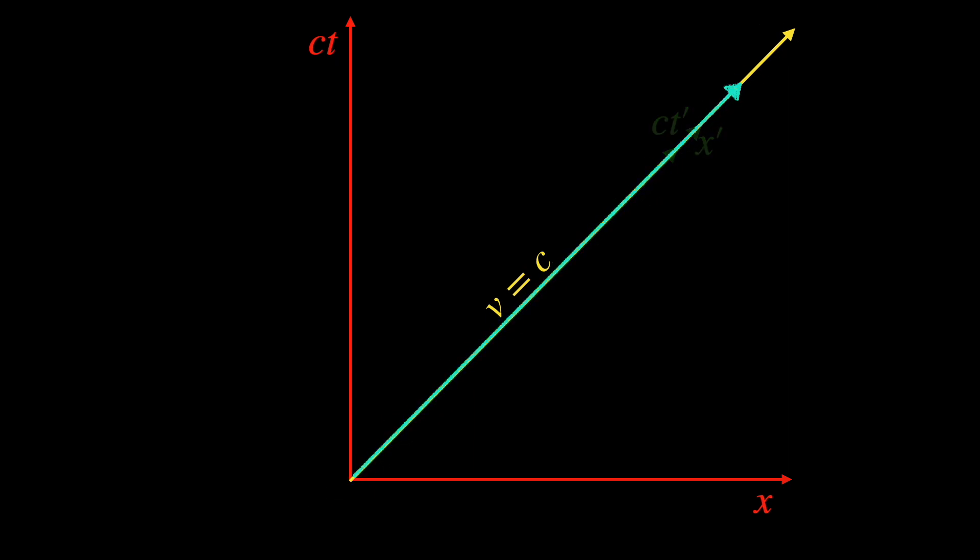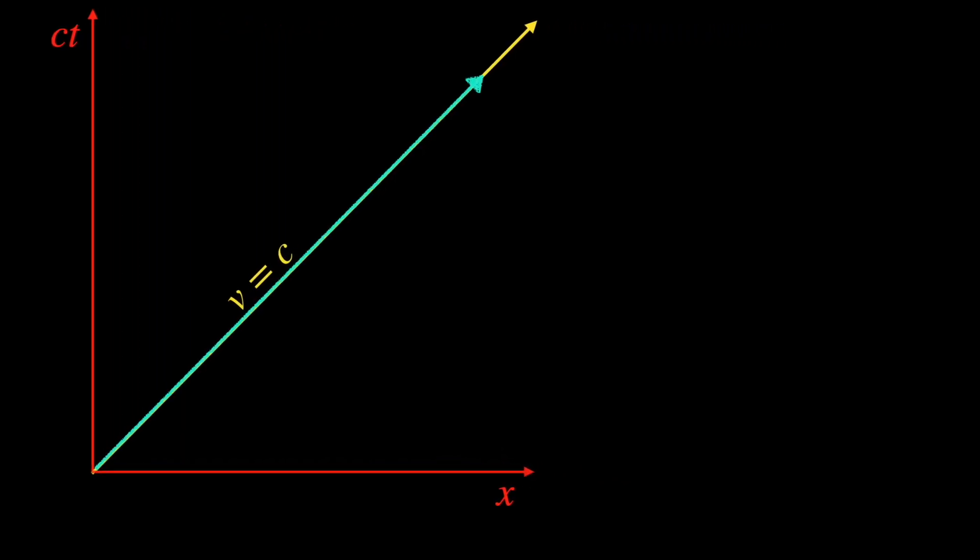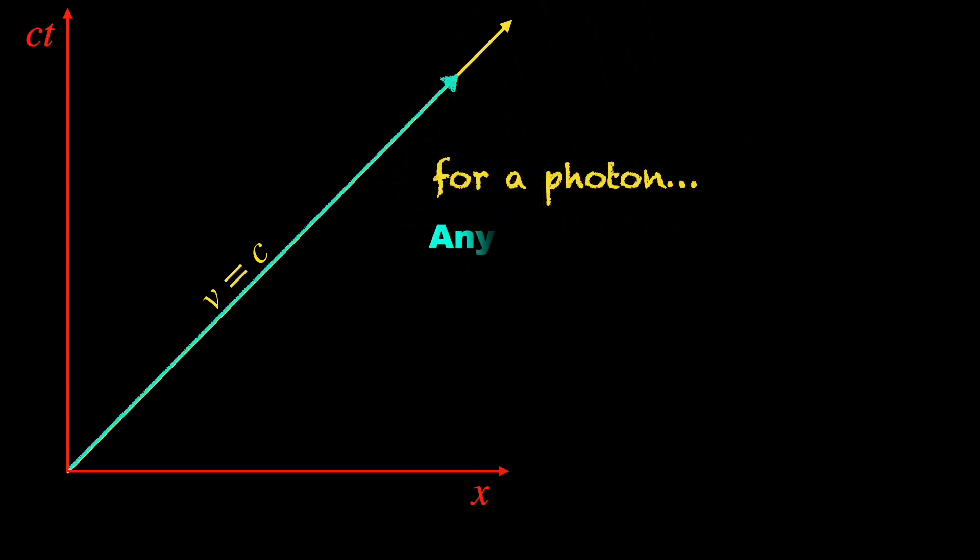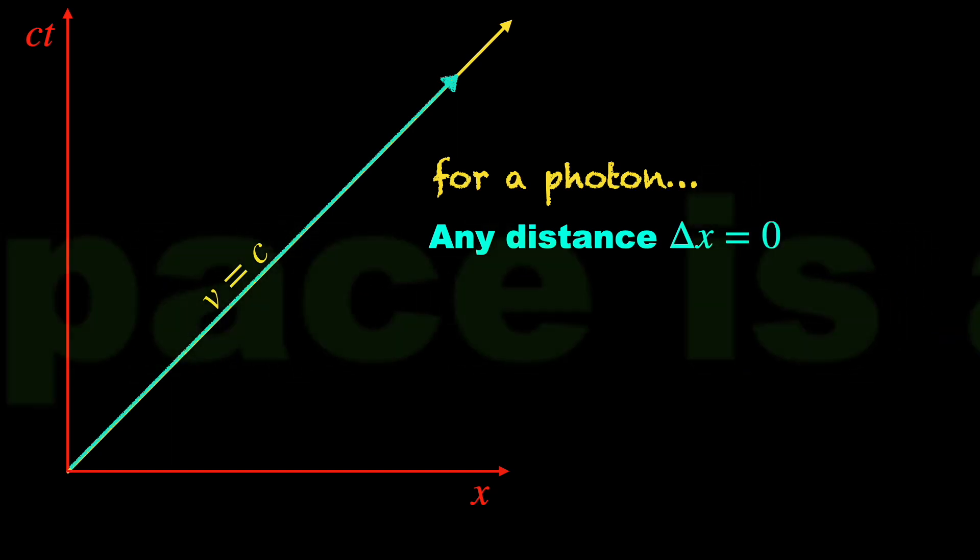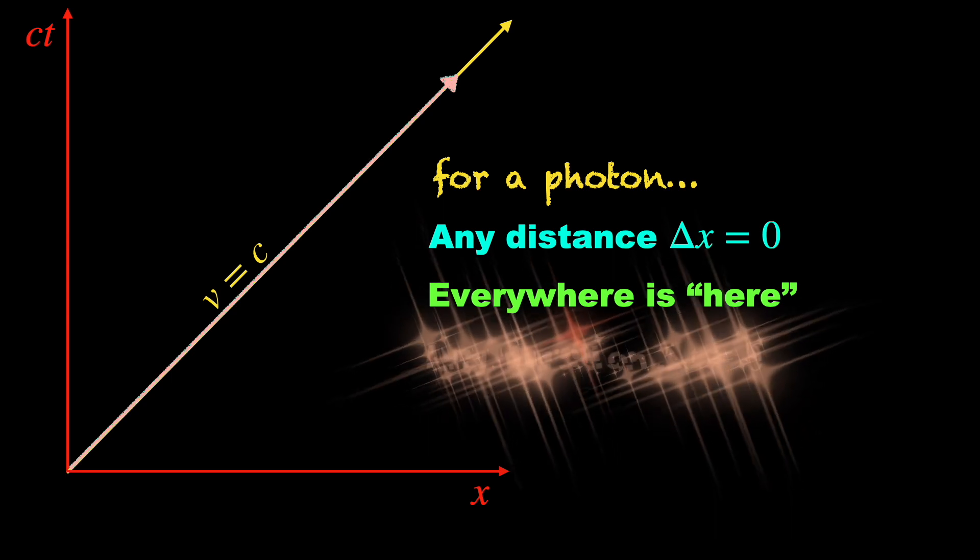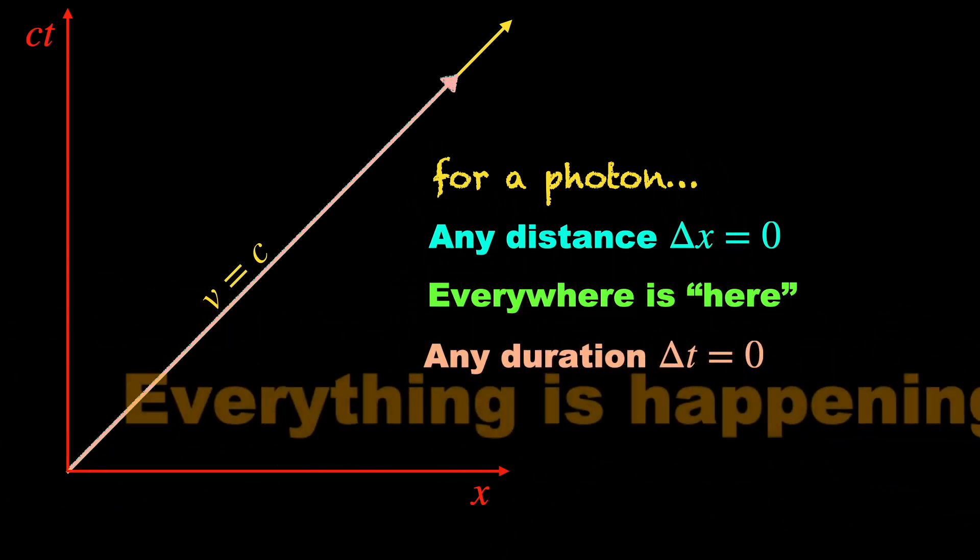Thus, for a photon, all of its space axis lies on the light cone, along which any interval is zero by definition. So from the photon's point of view, any spatial distance is always of zero length, meaning all events occur at the same place. The time axis of the photon also lies along the same light cone, so any temporal separation is again of zero duration, which means all events occur at the same instant as well.